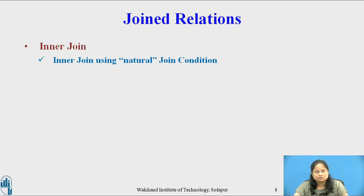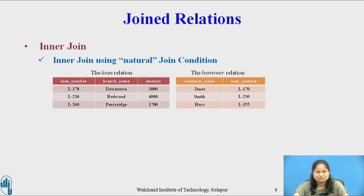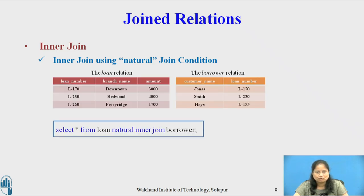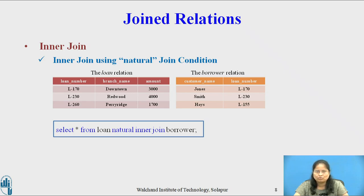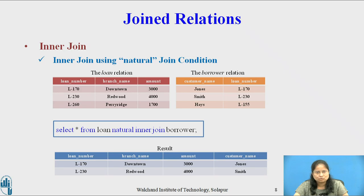Now consider the inner join using the natural join condition for relations loan and borrower. The query is: SELECT * FROM loan NATURAL INNER JOIN borrower. This expression computes the natural join of the two relations; the only attribute name common to loan and borrower is loan number. The natural join is equivalent to the natural inner join, hence the result of both queries is the same.